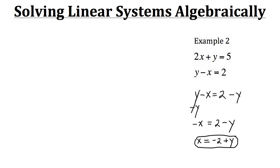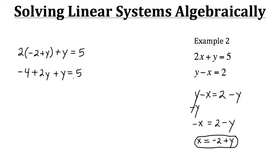We need to plug it into the first equation instead. Since negative 2 plus y equals x, we plug that in for the x value in equation 1. So we'll have 2 times our x value, which is (negative 2 plus y), and then plus y equals 5. Now we need to simplify — first distribute the 2 to the negative 2 and the positive y. So 2 times negative 2 gives us negative 4, and 2 times y gives us positive 2y. We still have this plus y here, equals 5.